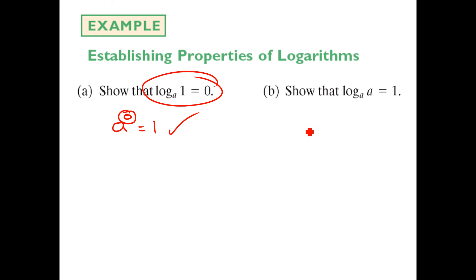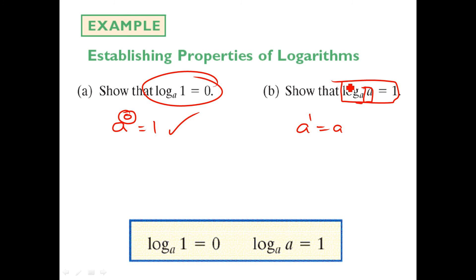Same thing with the second property. If we rewrite it, we'd have base a to the first power, and anything to the first power is itself, which is what we're saying here. So the second property of logarithms, log base a of a equals 1.